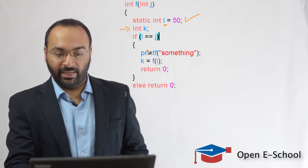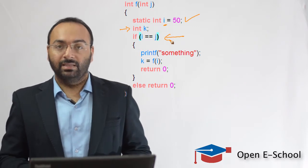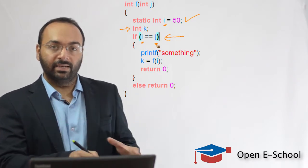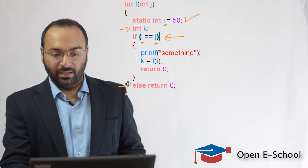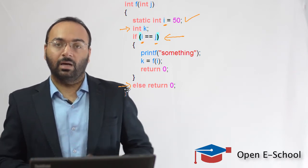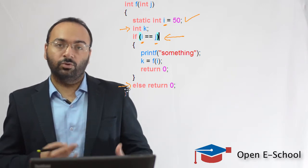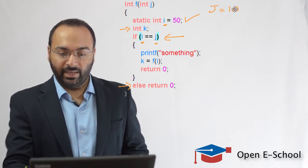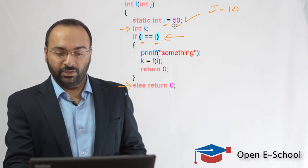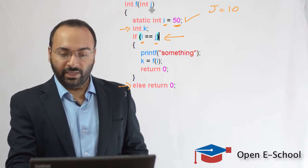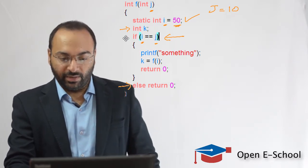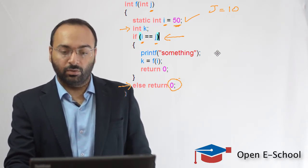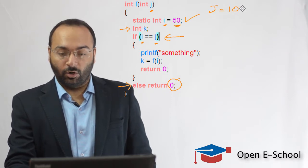We have another variable k declared here, and then an if condition. This condition says that if the value of i is the same as the value of j, we go inside the if block; otherwise we return 0. If we call this function passing j equal to 10, the if condition will be false because 10 is not equal to 50, so we simply return 0. The output should be 0.